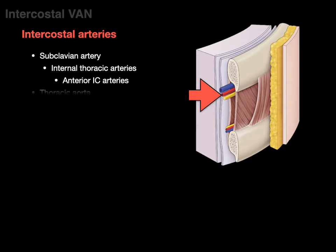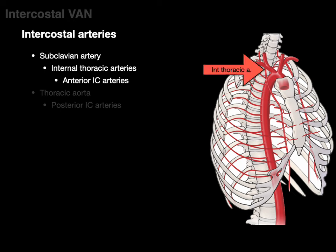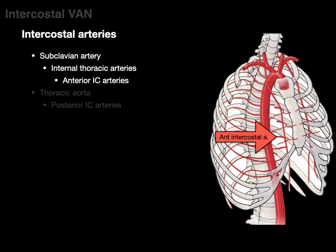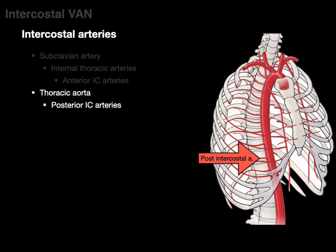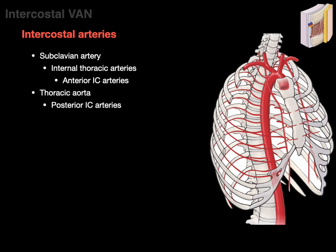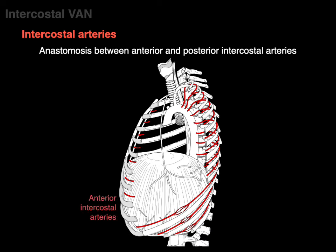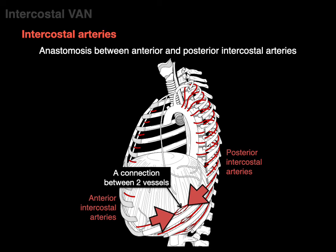For intercostal arteries: the internal thoracic artery branches off the subclavian artery and courses parallel to the sternum internal to the rib cage, giving rise segmentally to anterior intercostal arteries that supply each intercostal space. The thoracic aorta courses down and gives rise segmentally at each intercostal space to a posterior intercostal artery. The anterior and posterior intercostal arteries meet in the lateral body wall forming an anastomosis, which allows for collateral circulation.